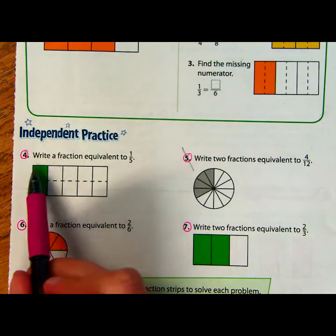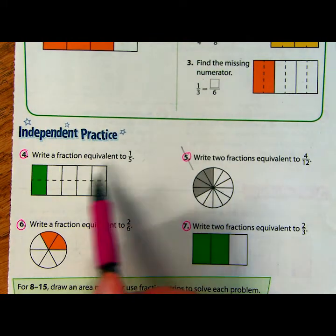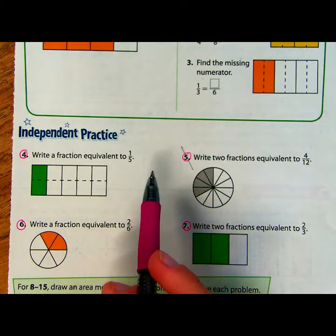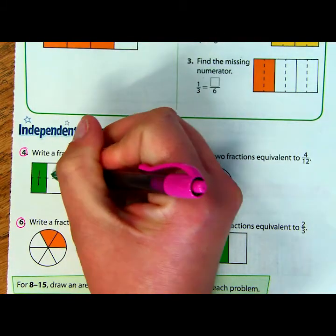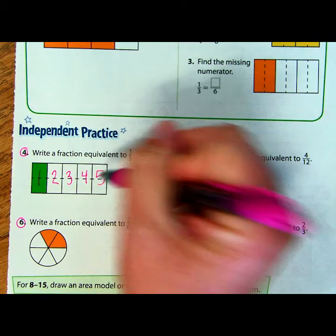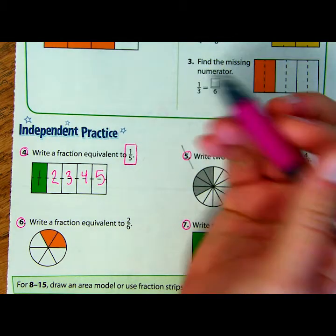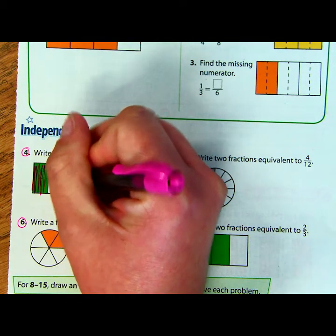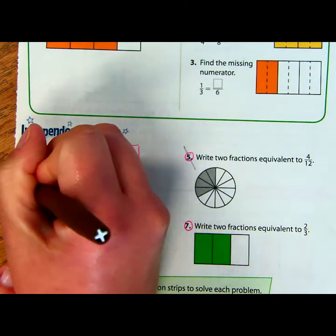So for question number 4, you have to write a fraction that's equivalent to 1 fifth. Well, many of you hopefully looked at this model and you said, but this isn't broken into five equal parts. It looks like what they did was that they originally drew a model with one, two, three, four, five pieces, correct? But now they're asking you to find the fraction that's equivalent to 1 fifth. When they had 1 fifth, that meant this entire part right here was shaded or one out of five pieces. However, then they went ahead and they split that model right down the middle, just kind of like Mrs. Connor did in the video.